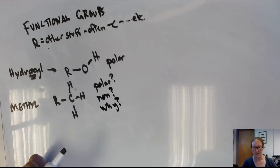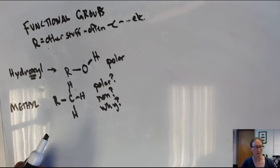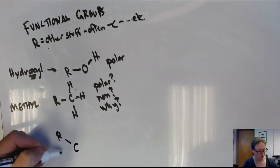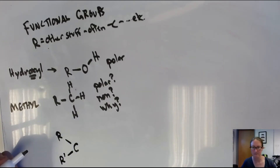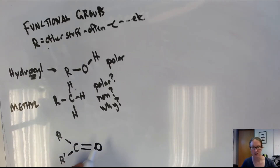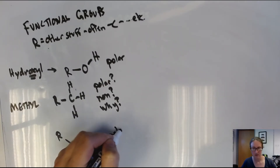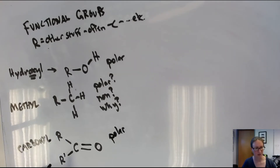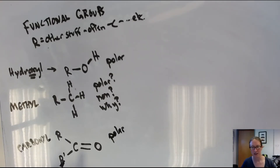Our third functional group is going to look a bit more exotic. It involves a carbon that is bonded to two other groups — we'll call those R and R prime — and it's also going to be double bonded to an oxygen. This arrangement is definitely polar, thanks to the oxygen, and it's referred to as a carbonyl group.